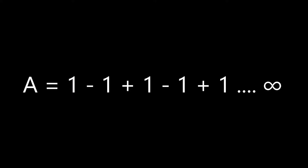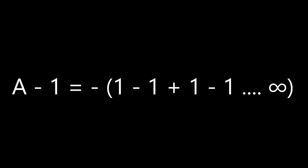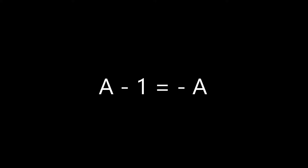So first, let us solve the solution for this sequence: 1 minus 1 plus 1 minus 1 plus 1, up to infinity. I am going to assign A as the sum of the sequence and transpose this one to the left side of the equation, which yields A minus 1 is equal to negative 1 plus 1 minus 1, following to infinity. Then, let's factor out the negative on the right side. So we have A minus 1 equals negative quantity of 1 minus 1 plus 1 minus 1 up to infinity. As you can see, 1 minus 1 plus 1 minus 1 up to infinity is just equal to A.